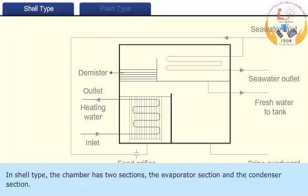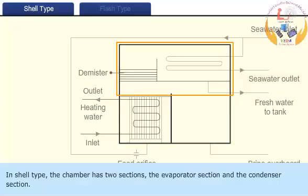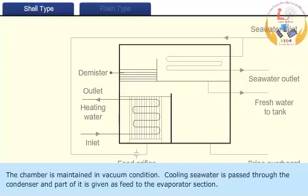In shell type, the chamber has two sections: the evaporator section and the condenser section. The chamber is maintained in vacuum condition.